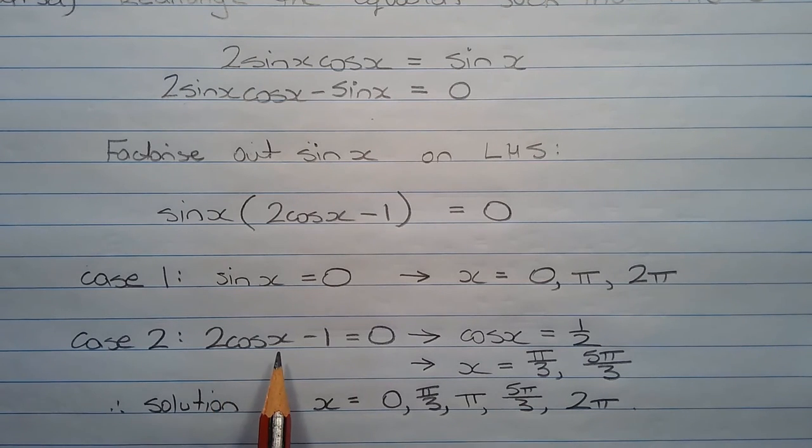For case 2, we have 2 cos x minus 1 equals 0. Rearranging this equation, we have cos x equals half, which means x equals pi over 3 or 5 pi over 3.